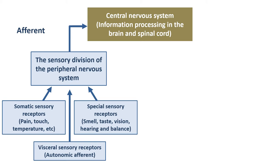Then we have the special sensory receptors - these are more about the senses. So we have smell, taste, vision, hearing, but also balance. We're somewhat less aware of some of these happening, but they all feed information in via this afferent pathway via the sensory division.